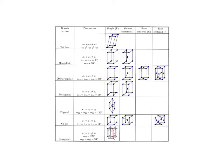Next in line is the orthorhombic, where the magnitudes of the unit cell vectors are all different from each other, but all the angles are 90 degrees. Tetragonal is more symmetric: all the angles are 90 degrees, and two of the unit cell vectors have the same magnitude — A1 equals A2 — but A3 is different from A1 and A2. Then we have the trigonal system, where A1 equals A2 equals A3, and all the angles are also equal, but they are all less than 120 degrees.